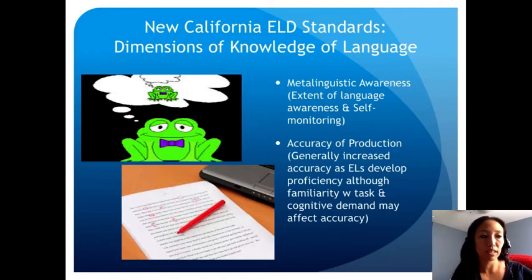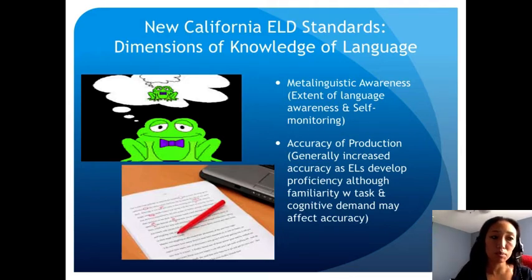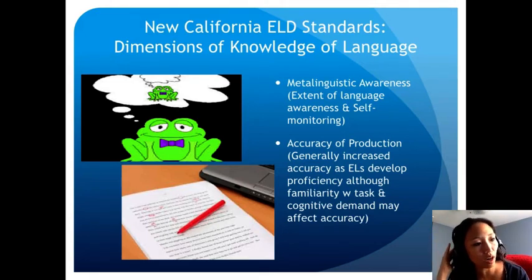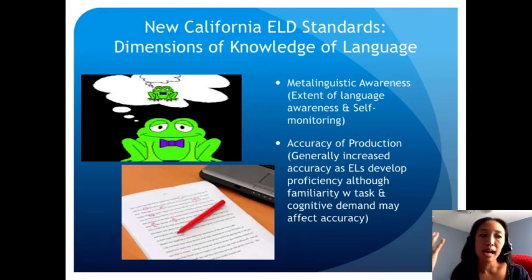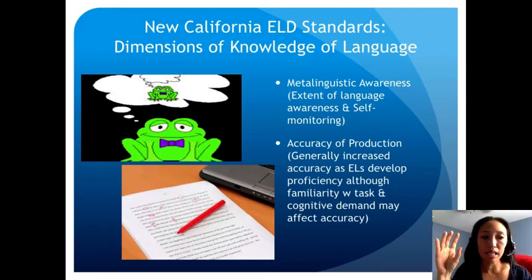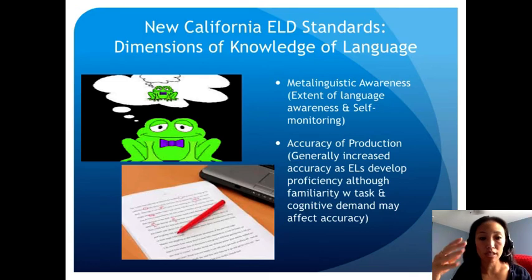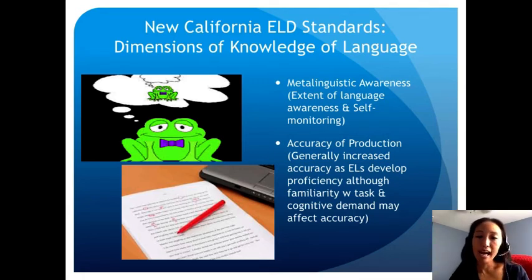Meta-linguistic awareness means students are aware of the similarities and differences between their native language and English, the ways in which different kinds of language are appropriate for different tasks, purposes, and audiences, and how to intentionally and purposefully use vocabulary, language structures, and self-monitor in their use of English. Accuracy of production refers to how often one makes errors and whether those errors actually impede meaning and the ability to interact with others.